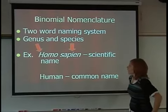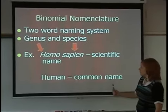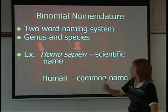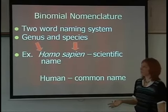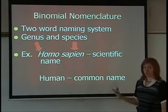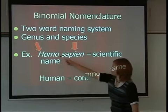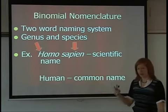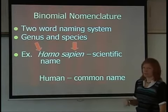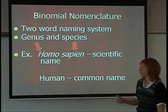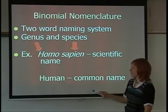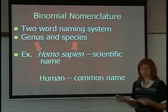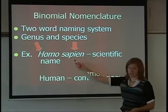We also have binomial nomenclature. An example is Homo sapien, which is the scientific name for humans. It's called binomial nomenclature because there are always two words — 'bi' meaning two, and 'nomenclature' meaning a naming system. All species on Earth have this two-word naming system, and it's based in Latin.